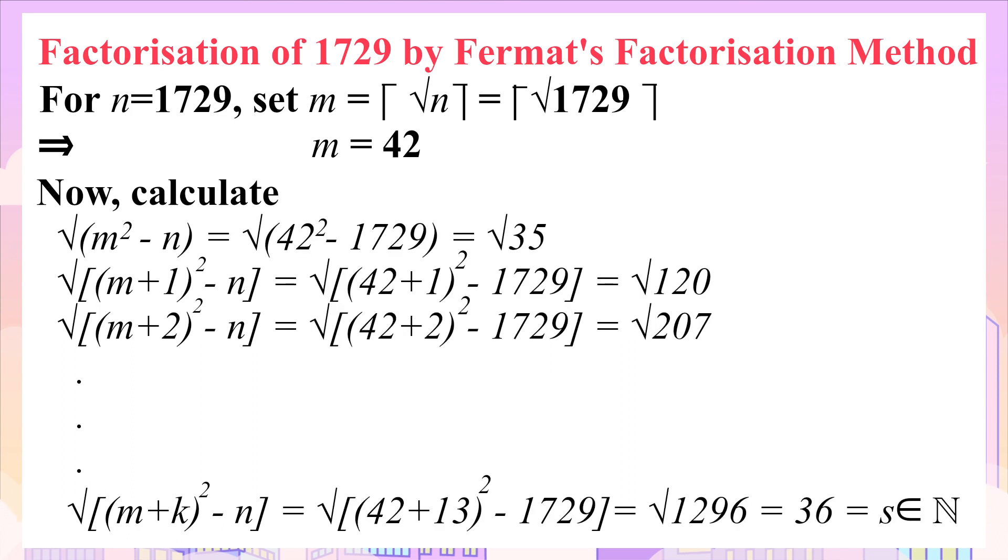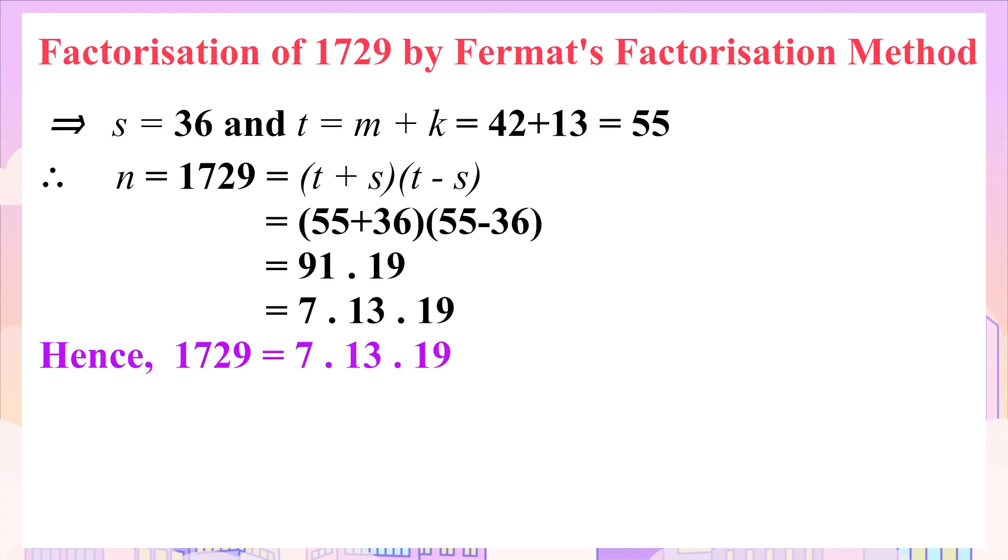Let that value be s. On reaching the value of k equal to 13, we finally get the natural number s which is equal to 36 after several iterations. Also, we have to set a value t given by m plus k. On putting the required values, we have t equals 55. Therefore, the Fermat's factorization is given by n equals t plus s times t minus s, which is the final step of factorization. From the values of t and s, we have 1729 equal to 91 times 19.